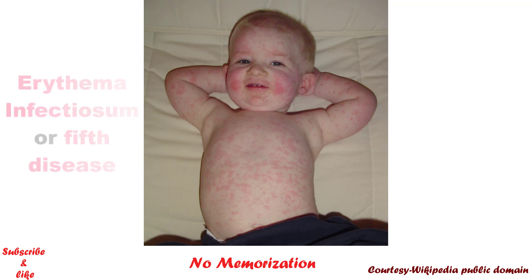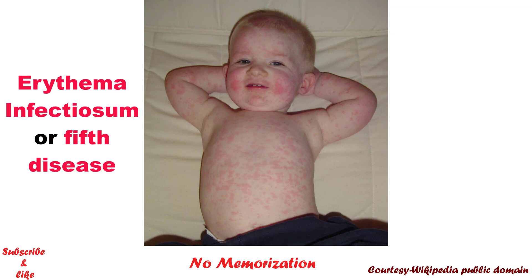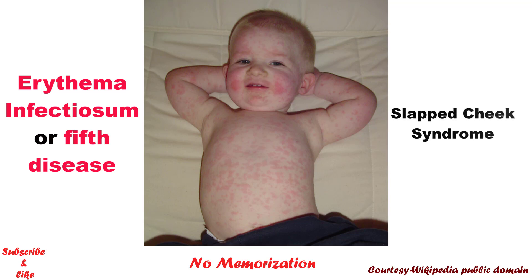That's right — erythema infectiosum or 5th disease. Do you know why it is called the 5th disease? Because it is number 5 on the standard list of rash-causing childhood diseases. Here, erythematous maculopapular rash most commonly appears on the face, particularly the cheeks, with circumoral sparing. Hence the other name is slapped cheek syndrome. The rash may also involve the trunk or extremities.